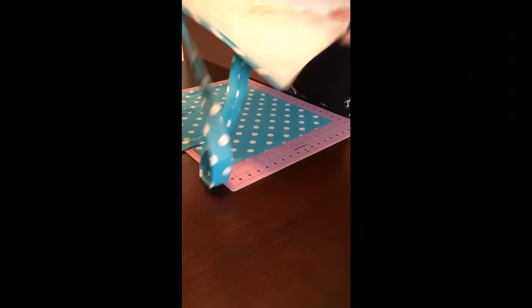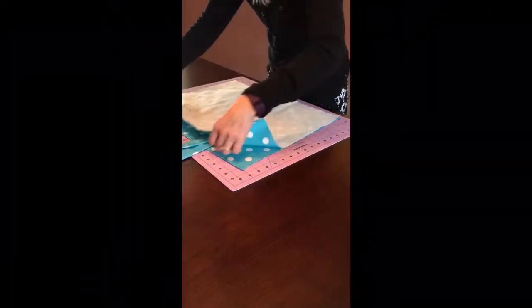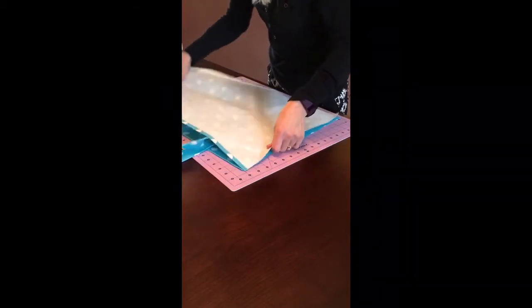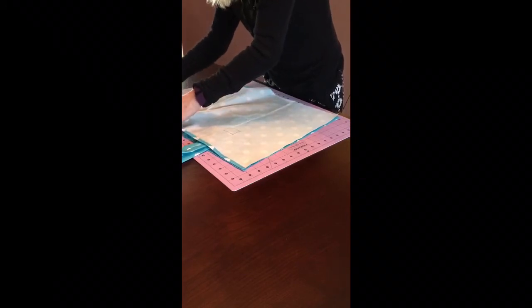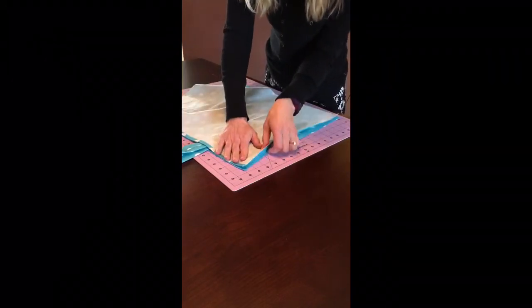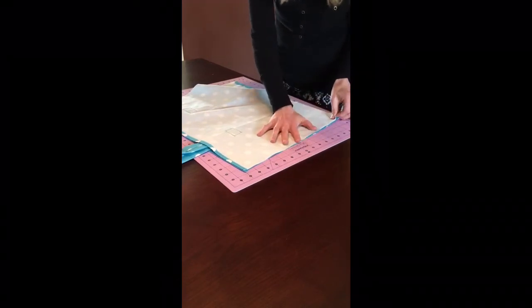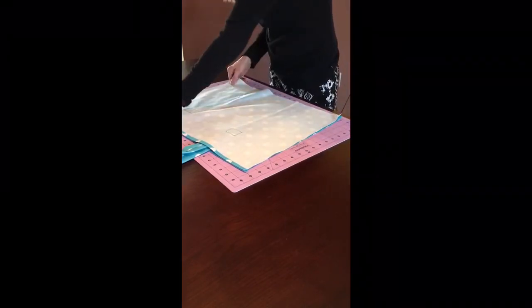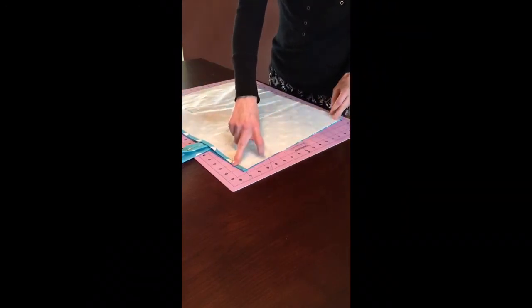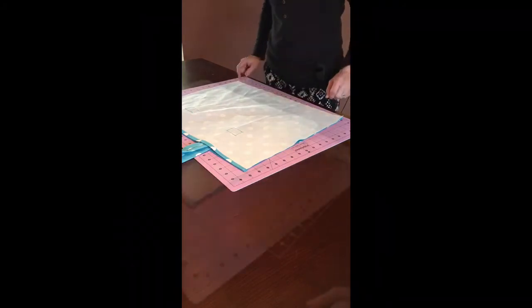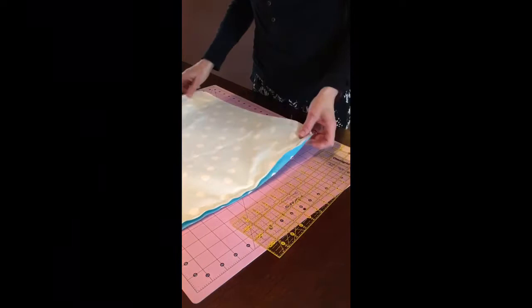The next step is we're going to sew the two pieces together. So just flip one on top of the other. Line up your edges. It might be a little bit of bulk because of the straps. That's okay. Just line up the edges and pin to where the edges are lined up. So pin them in place. You'll want to do about a half inch seam allowance down either side and across the bottom.